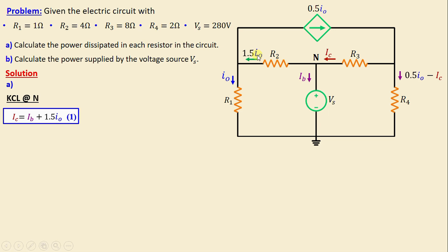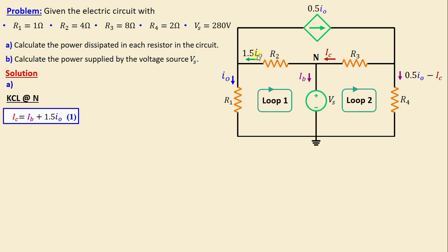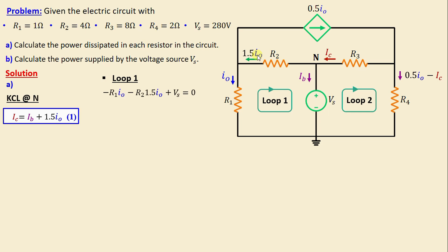First we need to define the different loops. This is Loop 1 and this is Loop 2. Let's start with Loop 1 by applying Kirchhoff's voltage law.